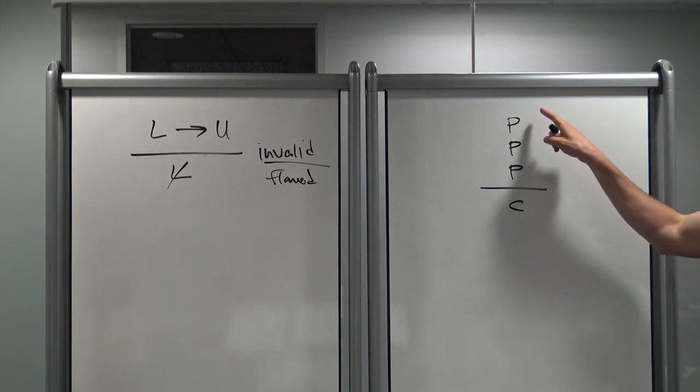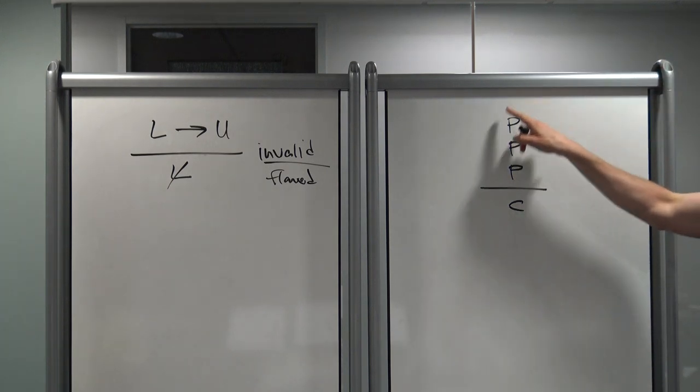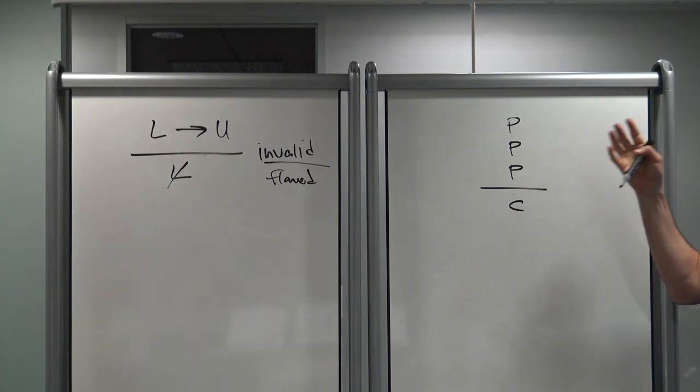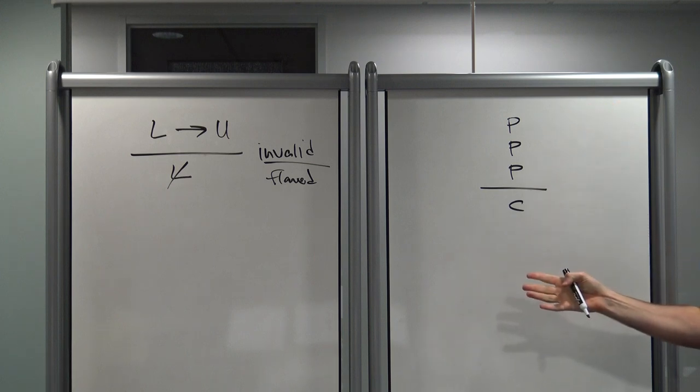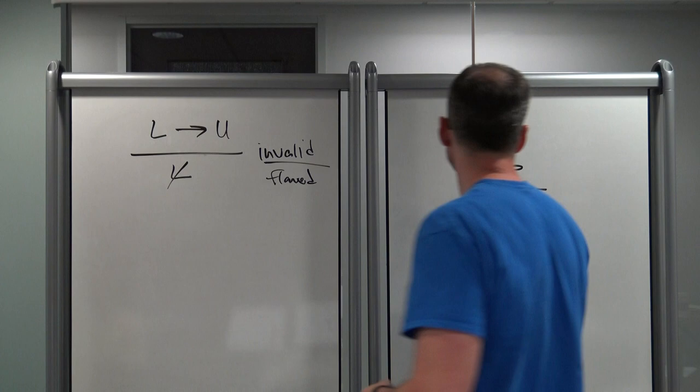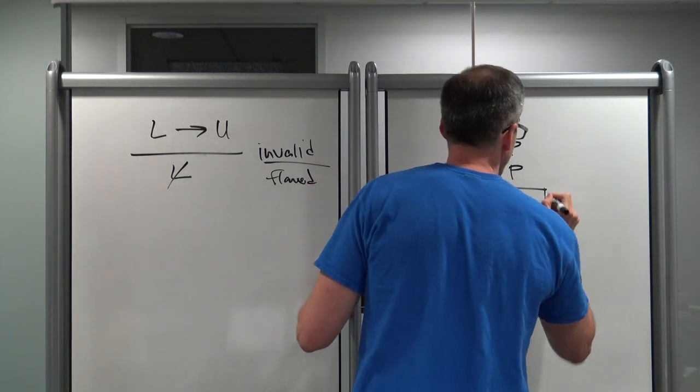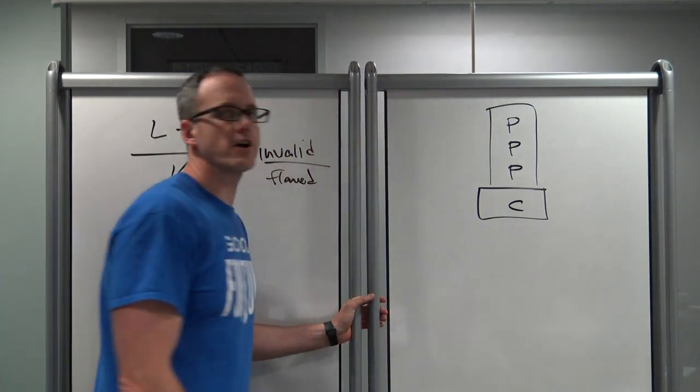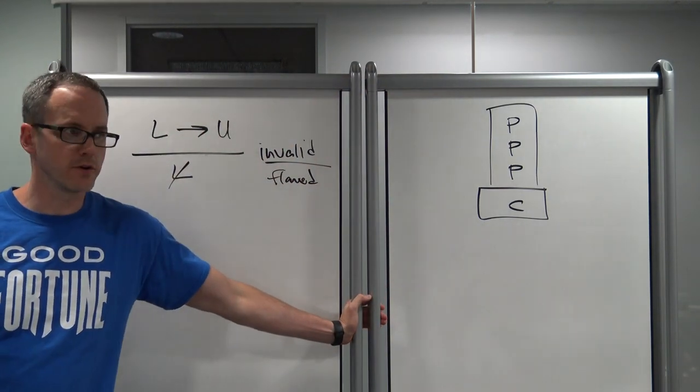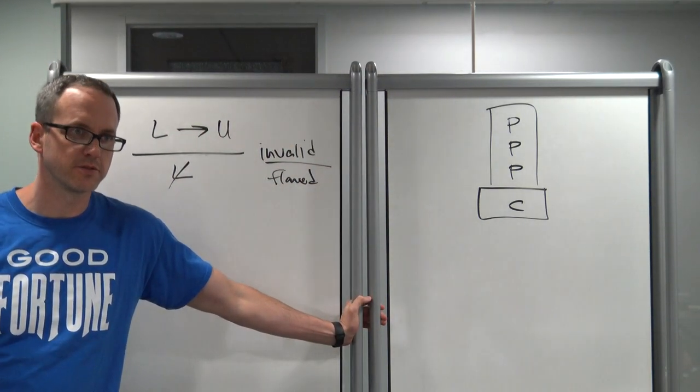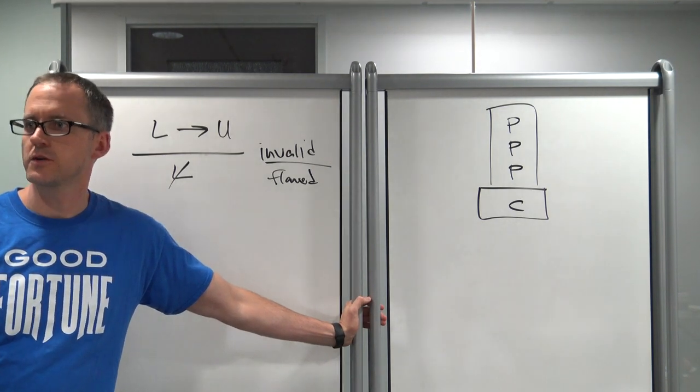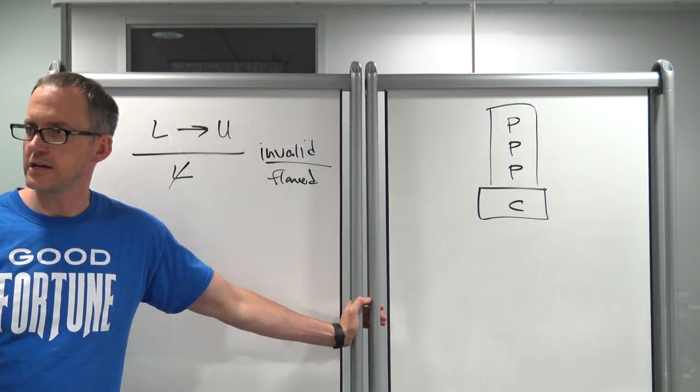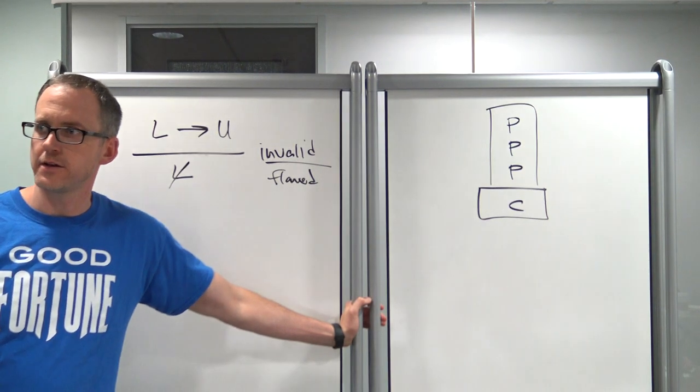So, what happens here is you read the argument. The conclusion is not always last. When we visually represent these arguments, I tend to put the conclusion last. But the conclusion can be presented anywhere. That said, you identify what the conclusion is, and you identify what the evidence is, and you figure out if the evidence proves the conclusion. And it won't. And you just try to figure out what pieces are missing. What else do I need to get to this conclusion?